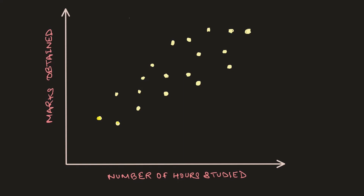I have plotted a diagram which is actually made-up data where we have number of hours studied plotted against marks obtained. Number of hours studied is the independent variable and marks obtained is the dependent variable, which depends on the factor of number of hours studied.